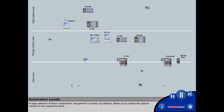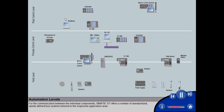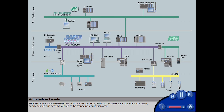A large selection of components, designed for a variety of problems, allows you to realize the optimal solution for the respective tasks. For the communication between the individual components, SIMATIC S7 offers a number of standardized, openly defined bus systems, tailored to the respective application area.